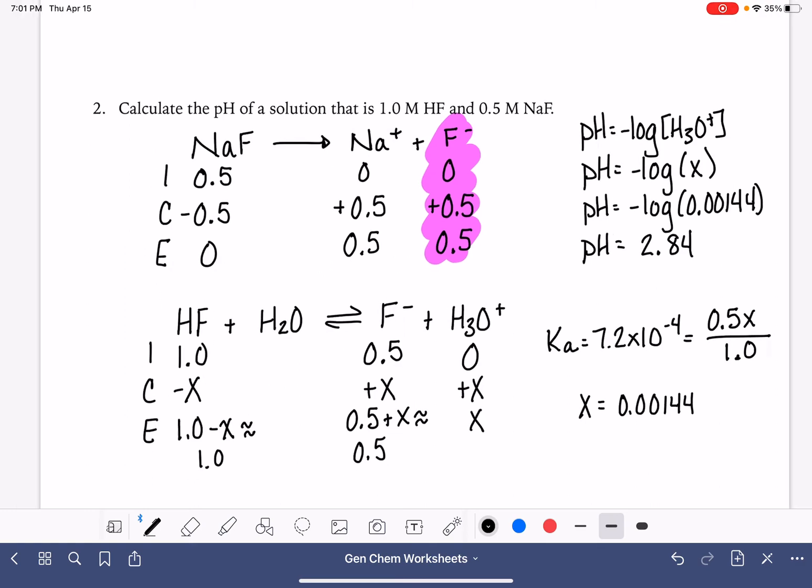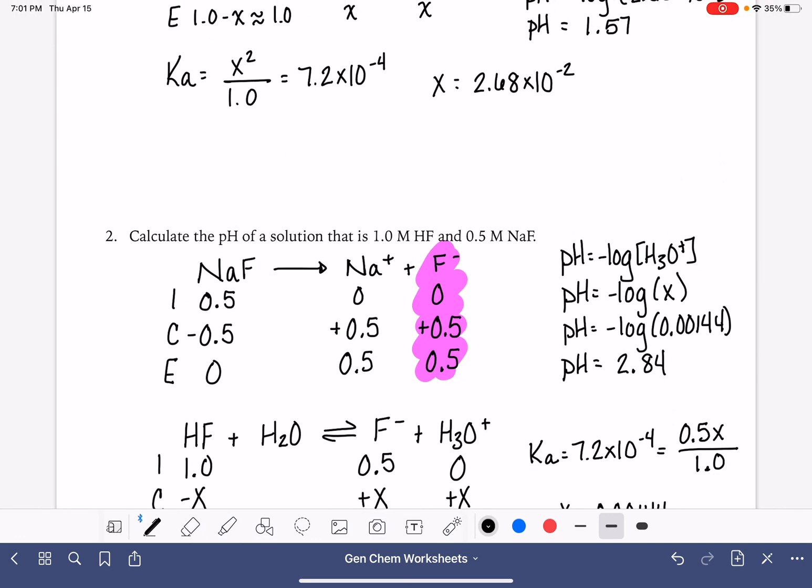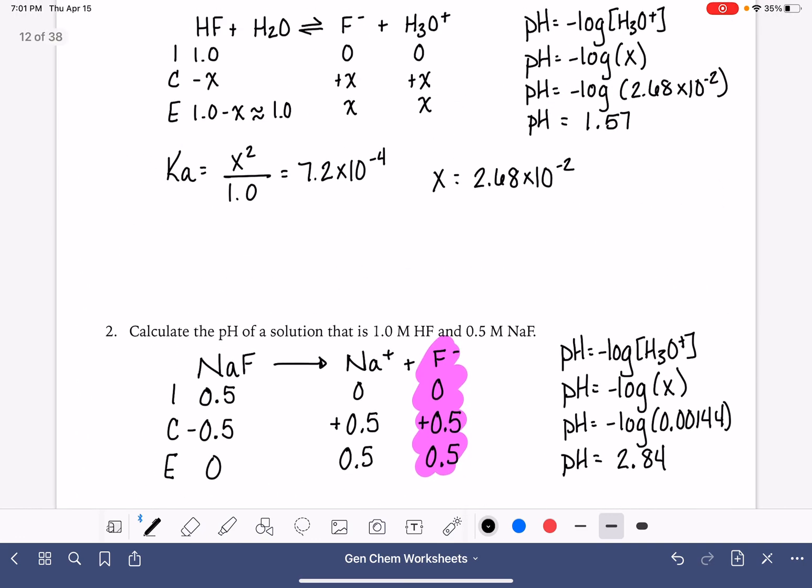So let's take a look and see how this affected the pH. It looks like having the common ion present caused our pH to go from 1.57 to 2.84. So the common ion raised the pH of this solution.